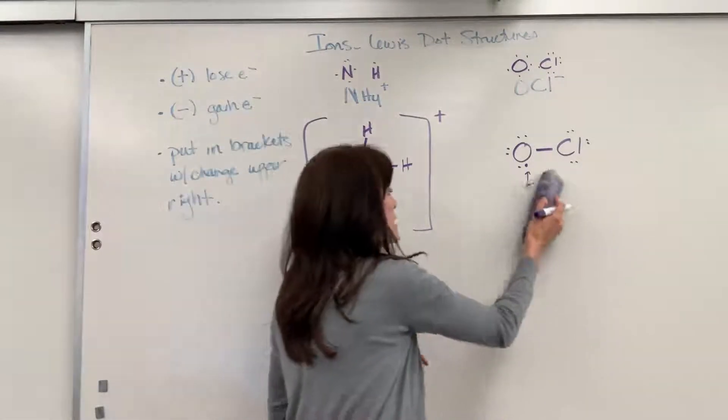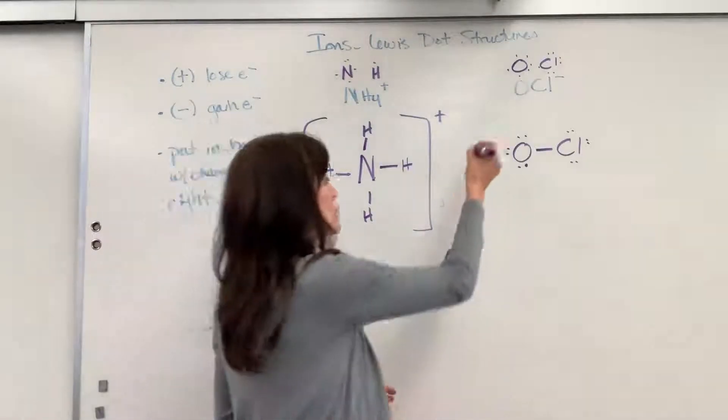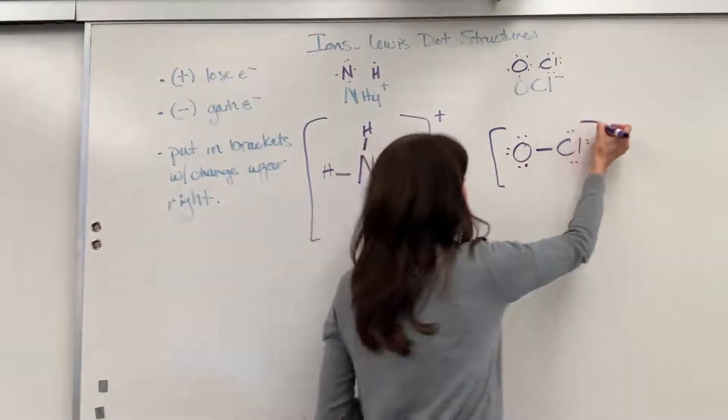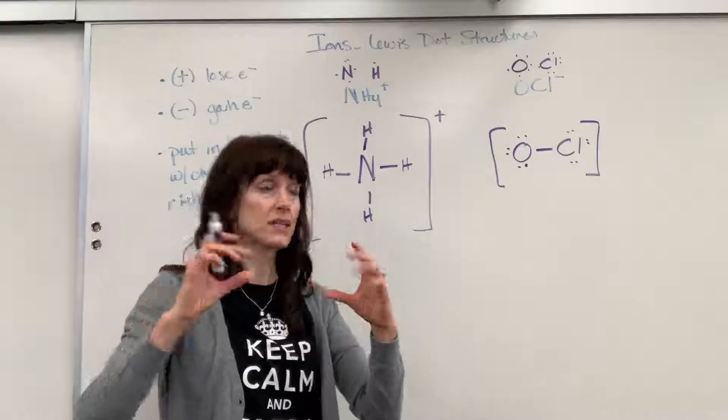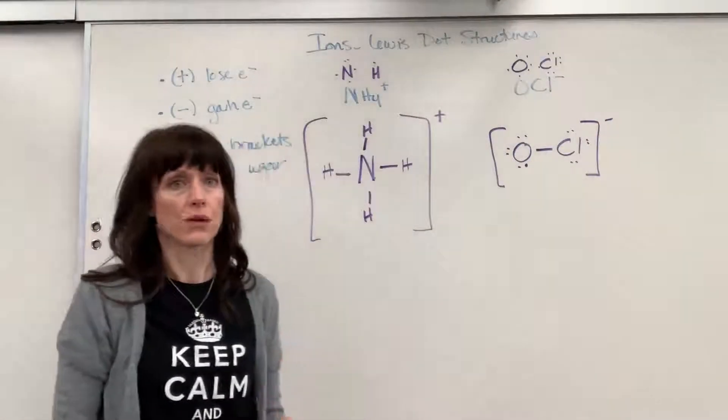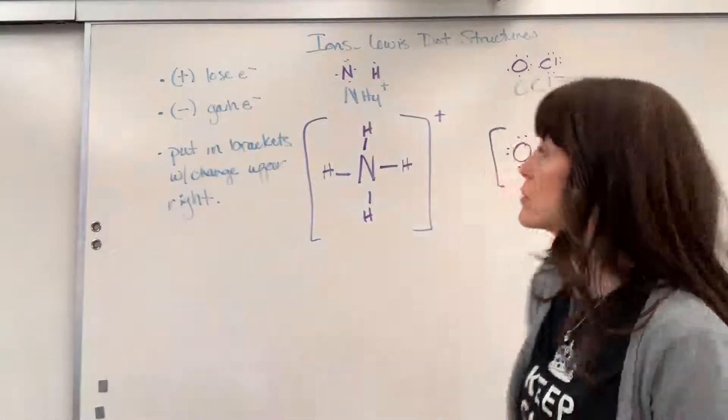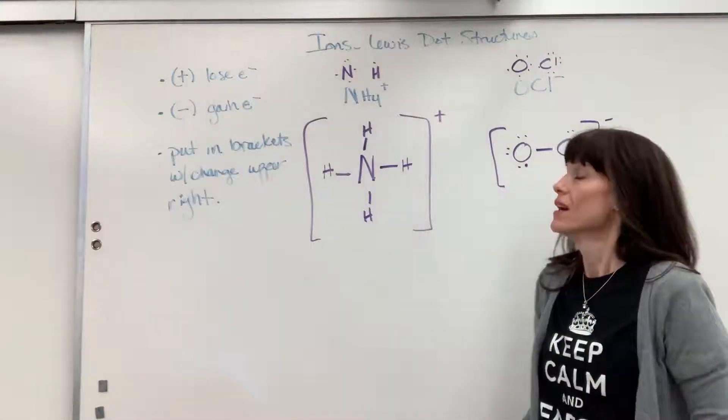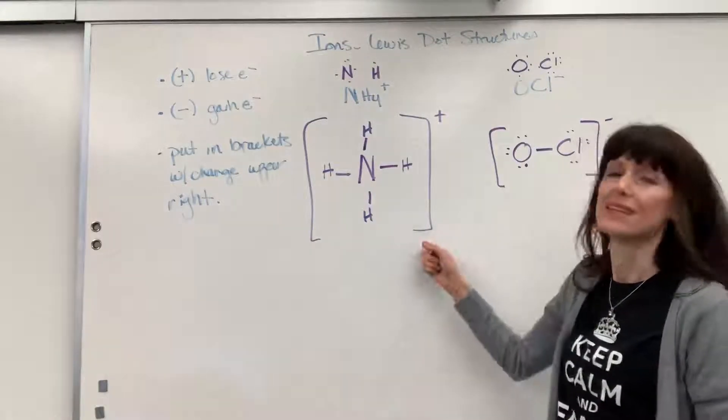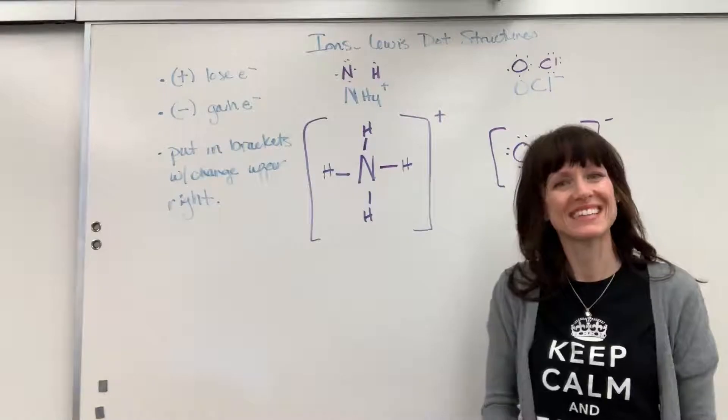Now this is a polyatomic ion. I need to show the reader that this is an ion. So we put the entire Lewis dot structure in brackets, and I take that charge and put it on the upper right-hand corner. And there you have it. So Lewis dot structures, when we are doing ions, what students will forget is the brackets. Remember to put those brackets. Have a nice day.